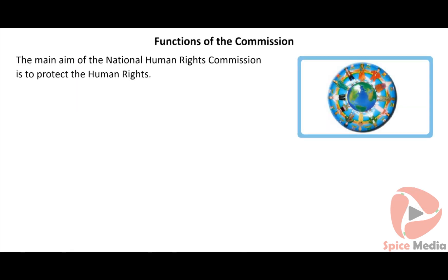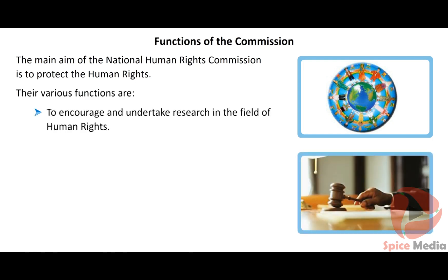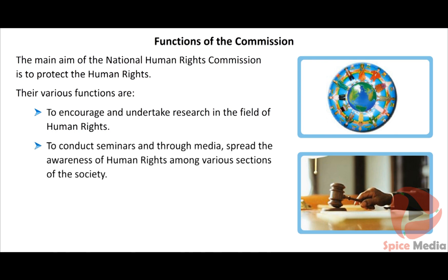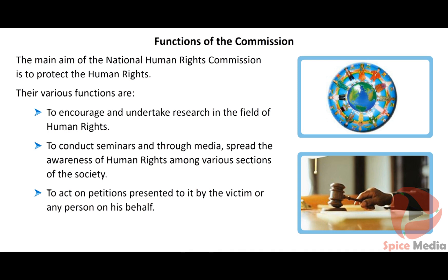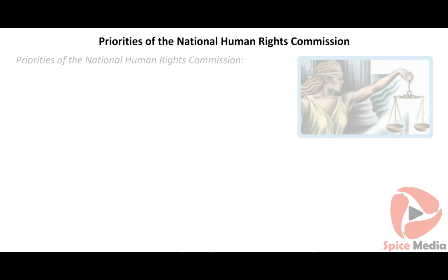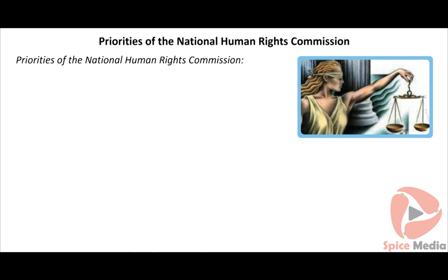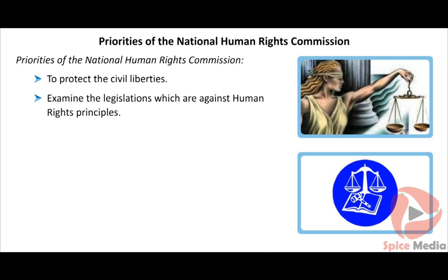The main aim of the National Human Rights Commission is to protect human rights. Its functions include: encouraging and undertaking research in the field of human rights; conducting seminars and spreading awareness through media among various sections of society; acting on petitions presented by the victim or any person on their behalf; examining legislations which are against human rights principles; and eliminating custodial violence and rape.